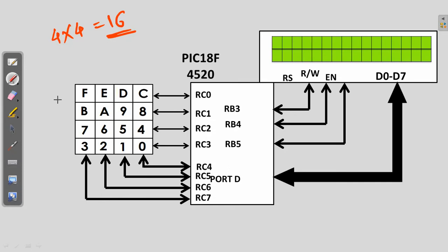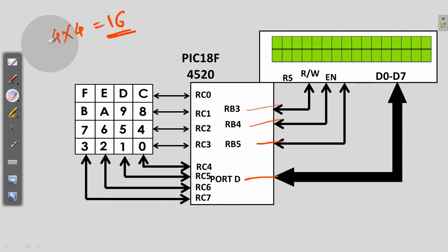We are connecting this keypad to the microcontroller on Port C. For the data pins of the LCD, we are using Port D. And for RS, RW, and Enable, we are using RB3, RB4, and RB5 respectively. This is the simple interfacing setup.